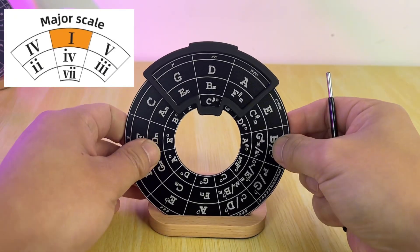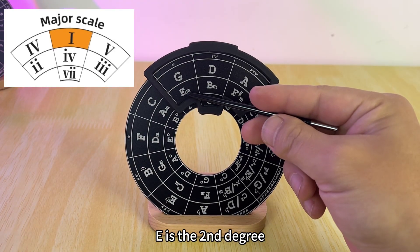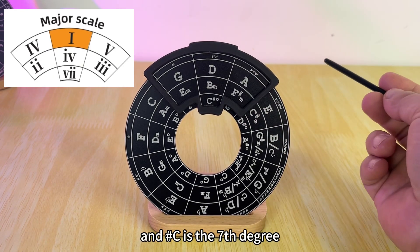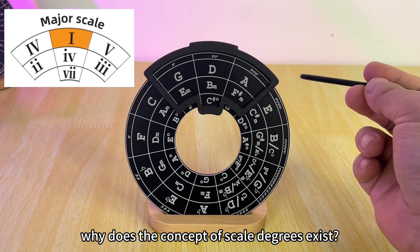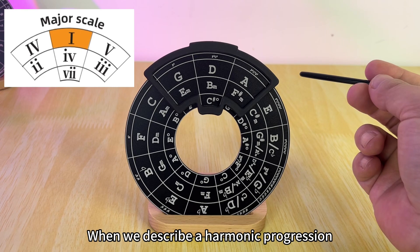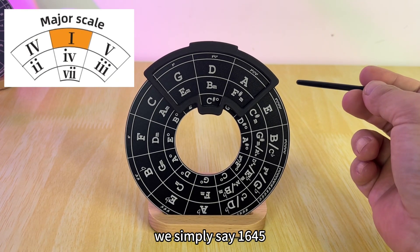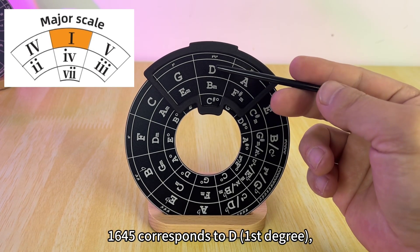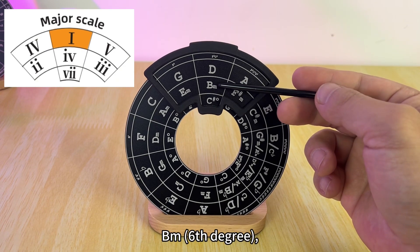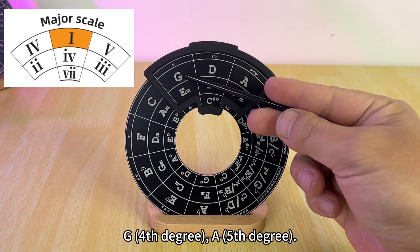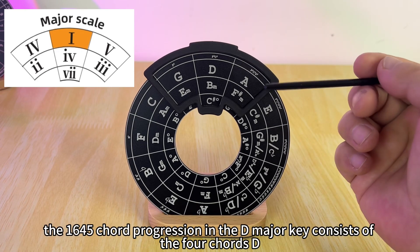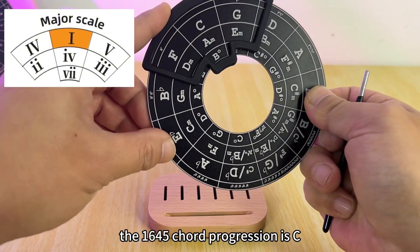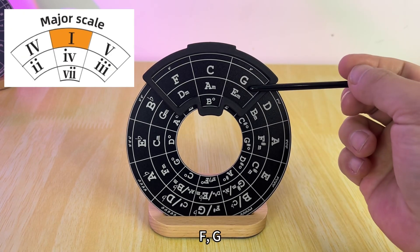So why does the concept of scale degrees exist? It is to facilitate key changing. When we describe a harmonic progression, we simply say 1-6-4-5, which refers to the first, sixth, fourth and fifth degrees. Then in the D major key, 1-6-4-5 corresponds to D first degree, Bm sixth degree, G fourth degree, A fifth degree. So the 1-6-4-5 chord progression in the D major key consists of the four chords D, Bm, G, and A. Switching to the C major key, the 1-6-4-5 chord progression is C, Am, F, G.